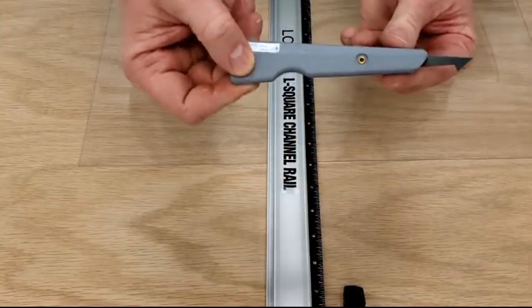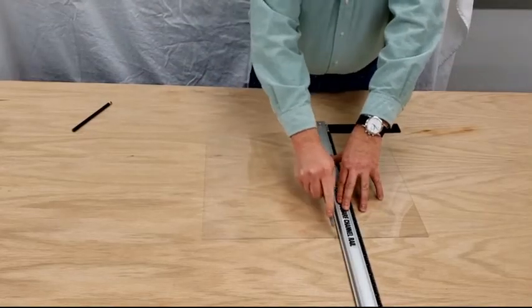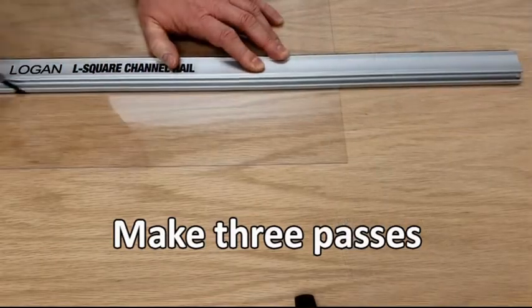Retract the blade on the plexi trimming tool and, holding it at a 45-degree angle, make three passes across the top of the plexi.